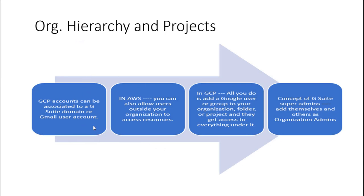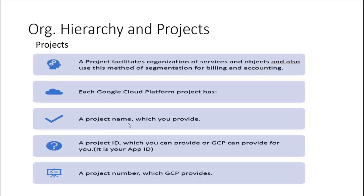One big differentiator with Google Cloud is the ability to tie in G Suite, a Gmail account, or Cloud Identity — an Identity as a Service platform. With GCP you can add a Google user or group to your organization, folder, or project, and they get access to everything under it. Google's best practice when adding multiple users is to create a group. In G Suite there's a super admin, also known as an organizational admin. When we talk about projects, their main goal is to facilitate organization of services and to segment billing and utilization.